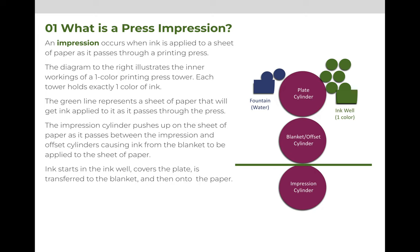What is a press impression? An impression occurs when ink is applied to a sheet of paper as it passes through a printing press. The diagram to the right illustrates the inner workings of a one-color printing press tower. Each tower holds exactly one color of ink. The green line at the bottom represents a sheet of paper that will pass through the printing press. The press impression occurs when the impression cylinder pushes up on the sheet of paper as it passes between the impression cylinder and the offset cylinder, causing ink from the blanket, which is wrapped around the offset cylinder, to be applied to the sheet of paper.